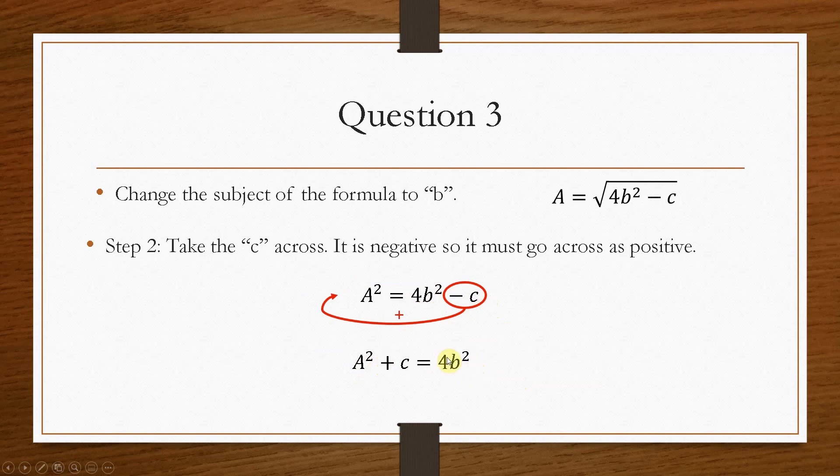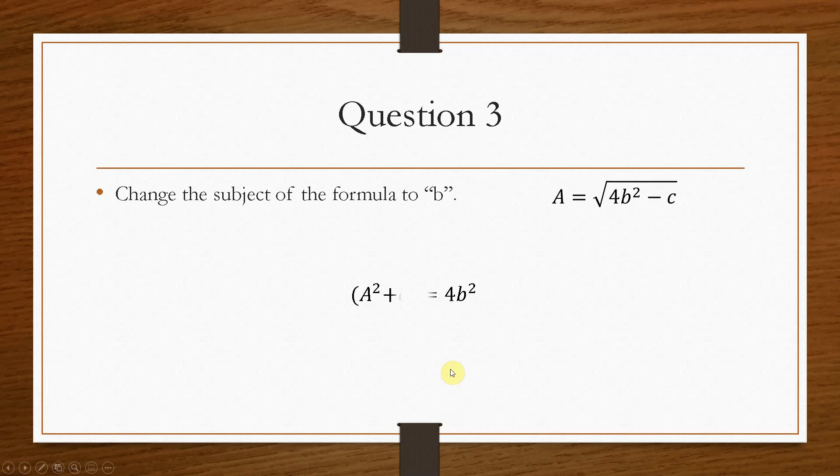Now we have to get rid of the 4, and we also have to get rid of the square. I'm going to just pop these into brackets, group everything together. So the next thing, the easiest thing to do is get rid of the 4 first. Because this square, when it goes over, is going to cover everything, and it's going to make life difficult if we do that first. So we'll take the 4 across.